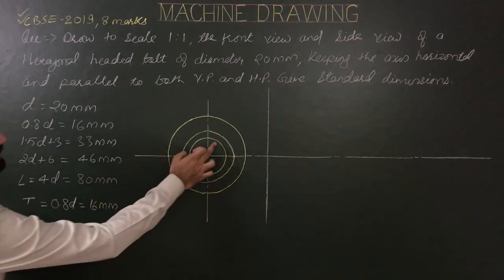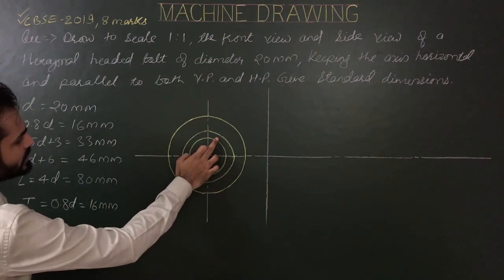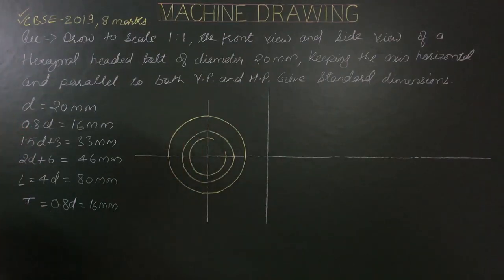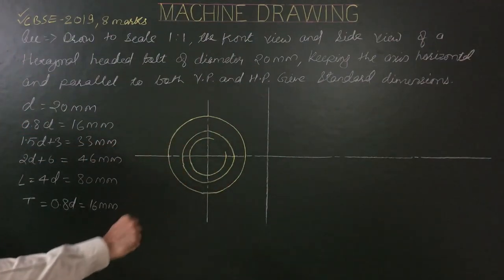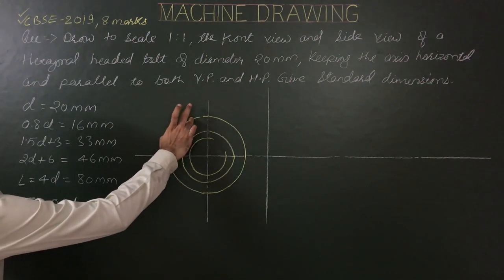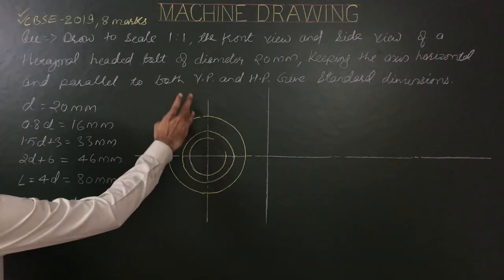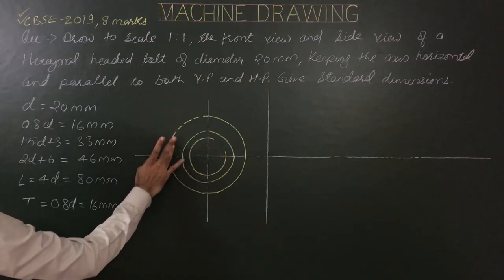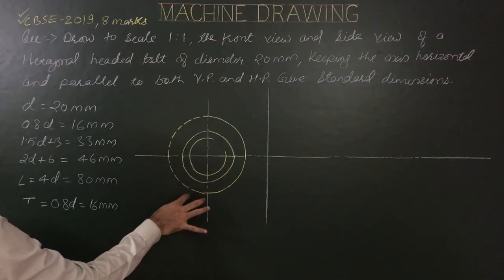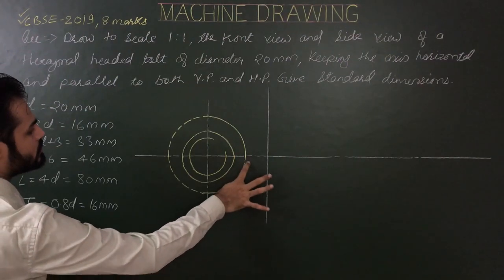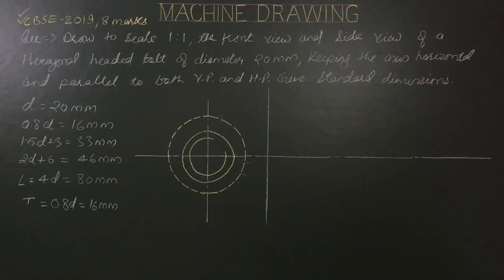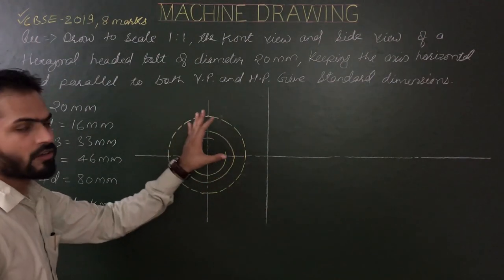Since we have external threads, the inner circle with diameter 0.8D is incomplete or interrupted. We are observing from that side, so the circle with diameter 1.5D + 3 is a hidden circle. Now for construction of the hexagon along the chamfering circle.